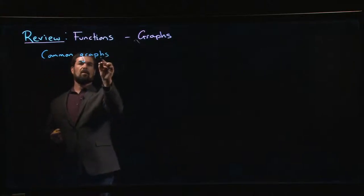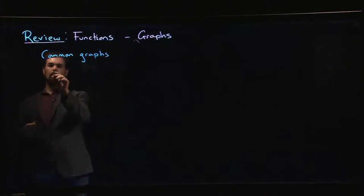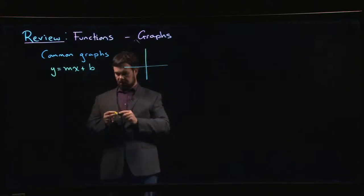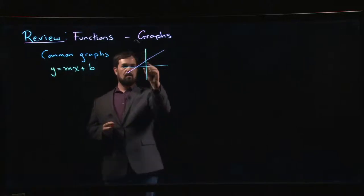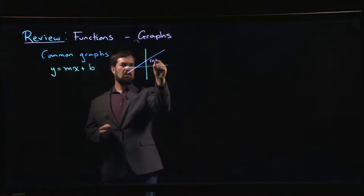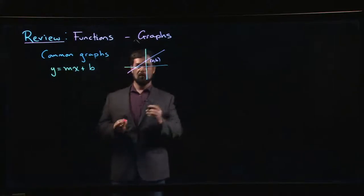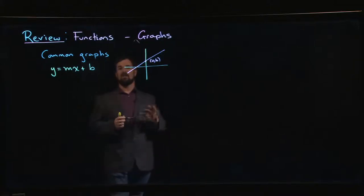Common graphs: well, we have lines. One of the ways you often see lines written is y equals mx plus b, this slope-intercept form. The graph of the line tends to look something like this. This point here, the b, is that y-intercept, the place where it crosses the y-axis. M is the slope, rise over run.